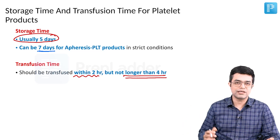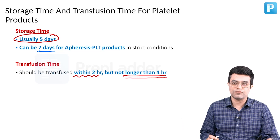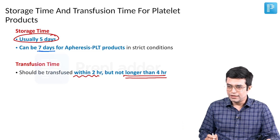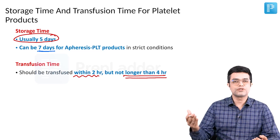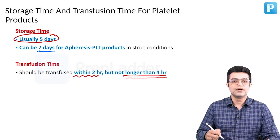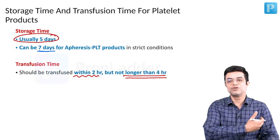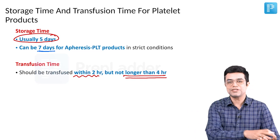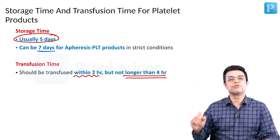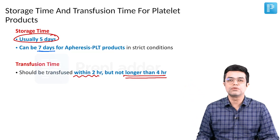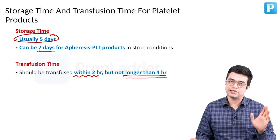A prolonged platelet transfusion is a common mistake first-year residents in pediatrics often make. Their seniors have taught them that all blood products should be given slowly, so they start platelet transfusion and keep the rate over 12 hours — absolutely wrong. It is to be given within 2 hours as a transfusion.